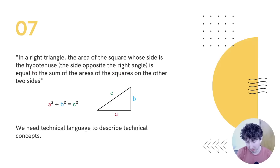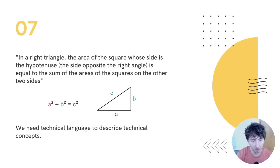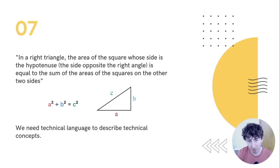If we think about how technical language works in mathematics: the most compact English summary of the Pythagorean theorem is — 'In a right triangle, the area of the square whose side is the hypotenuse (the side opposite the right angle) is equal to the sum of the areas of the squares on the other two sides.' The algebraic representation is just A squared plus B squared equals C squared. Not only is that more compact, but if you understand algebra, it is much less open to misinterpretation — actually much clearer than the long wordy English version.